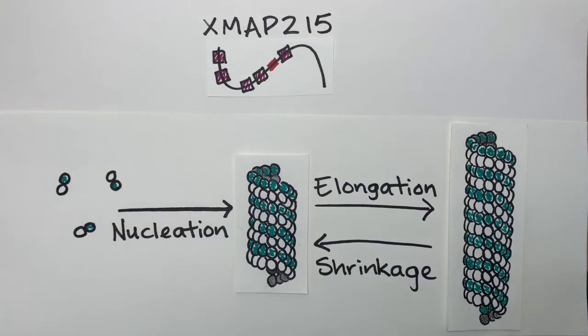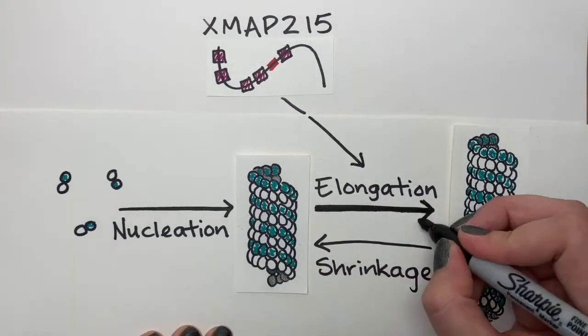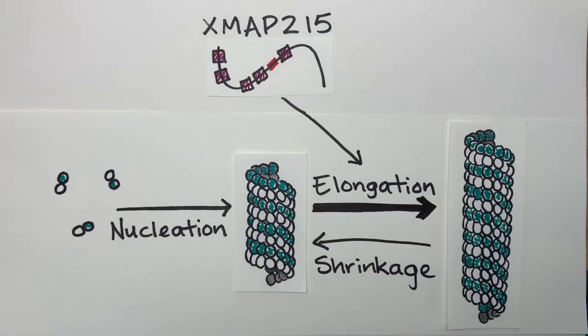Another protein of interest, XMAP215, greatly increases the elongation rate of existing microtubules. But XMAP215 has been implicated in nucleation as well.